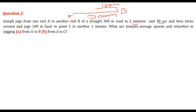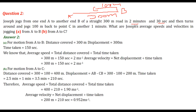That point is C. He takes another 1 minute to return. What are Joseph's average speeds and velocities jogging from A to B and from A to C? From A to B, the distance covered is 300 meters. The displacement is also 300 meters and the time is 150 seconds.